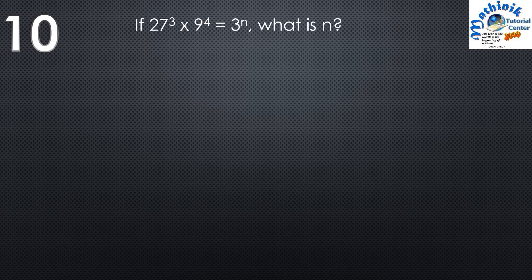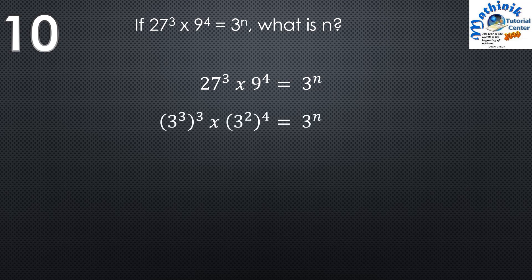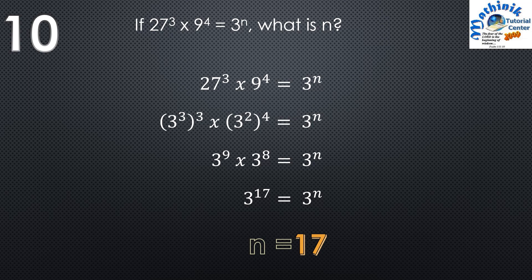Last question, number 10: If 27 cubed times 9 to the 4th power equals 3 to the n, what is the value of n? We express 27 and 9 as exponential expressions with base 3: 27 is 3 cubed and 9 is 3 squared. So we have 3 to the 9th times 3 to the 8th equals 3 to the n. Adding exponents with the same base: 3 to the 17th equals 3 to the n. By comparison, n must be 17.